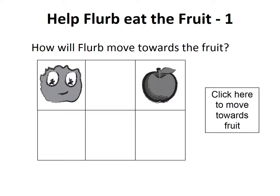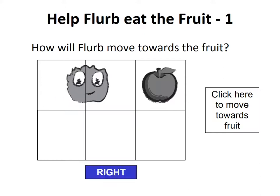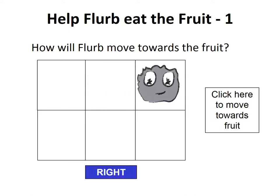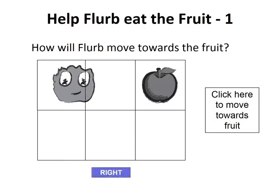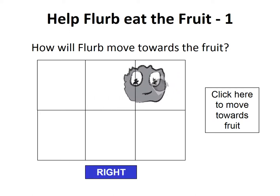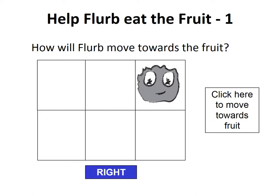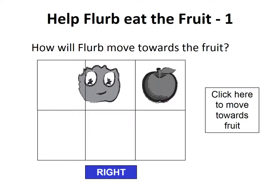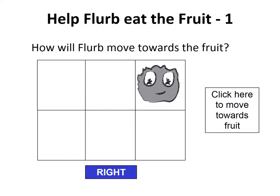Let's check the answer. First, Fleur moves to the right by one step, and then right again by one more step. So Fleur has to move twice in the right direction. Let us check the answer again — it is one step right, another step right. Again, one step right, another step right, and the fruit is gone.